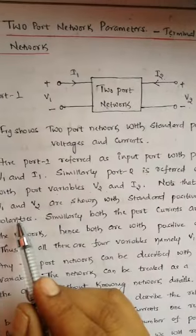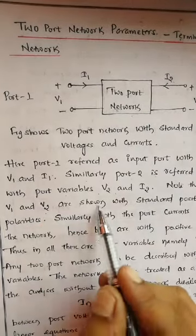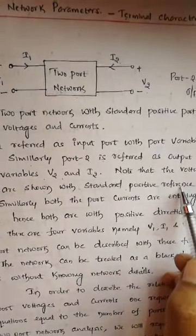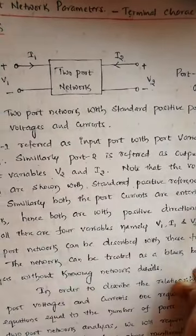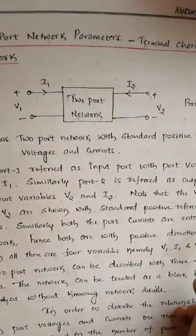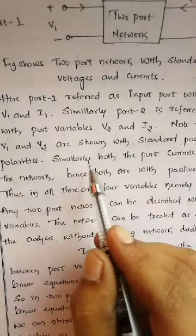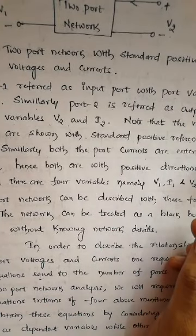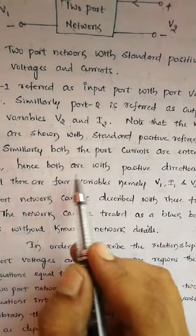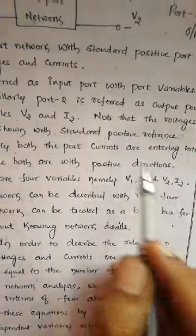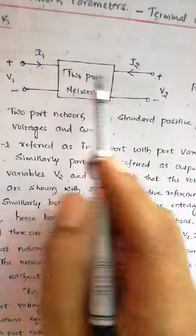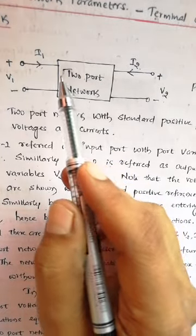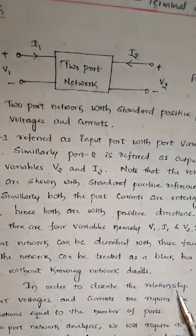Note that the voltages V1 and V2 are shown with standard positive reference polarities. Similarly, both port currents I1 and I2 are entering into the network, and because of that the polarities of the currents are positive.